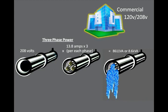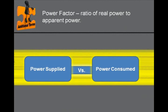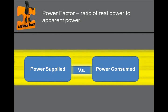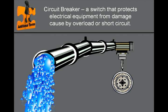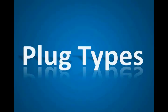Let's look at additional terminology used when talking about power in today's data center. Watts measures the real power drawn by the load equipment and is used as a measurement of both power and heat generated by the equipment. Using the water flowing analogy, watts is the amount of water that is actually used. Power factor is the ratio of real power to apparent power, or how much power is being supplied versus what is actually being consumed. Most modern IT equipment has a power factor of 1, meaning the equipment efficiently uses the power supplied. Factors of less than 1 signify less efficient equipment. A circuit breaker is a type of switch designed to protect electrical equipment from damage caused by an overload or a short circuit. Using the water flowing analogy, if the pressure in the pipe becomes too high, the circuit breaker acts as a valve that closes the pipe.